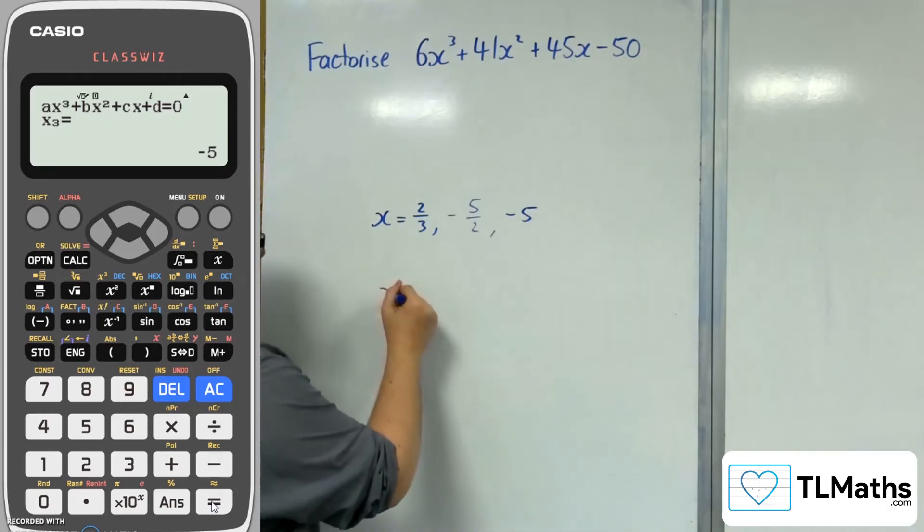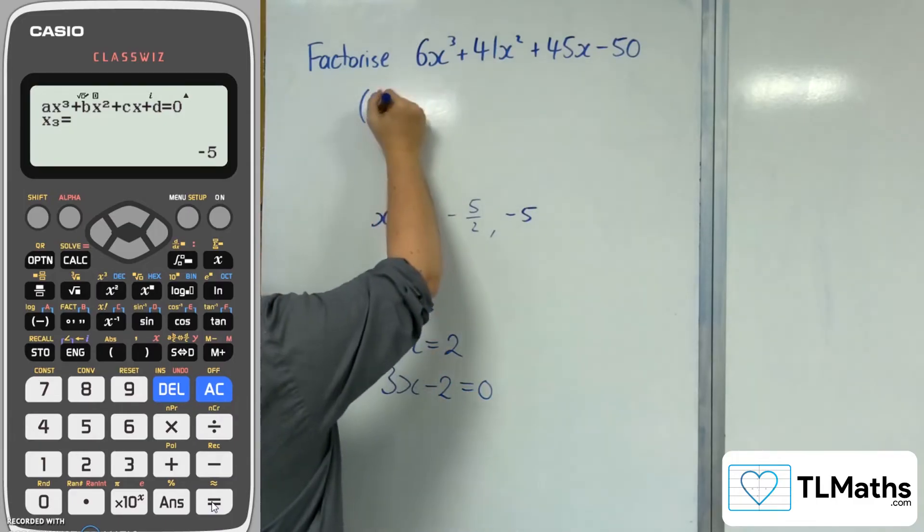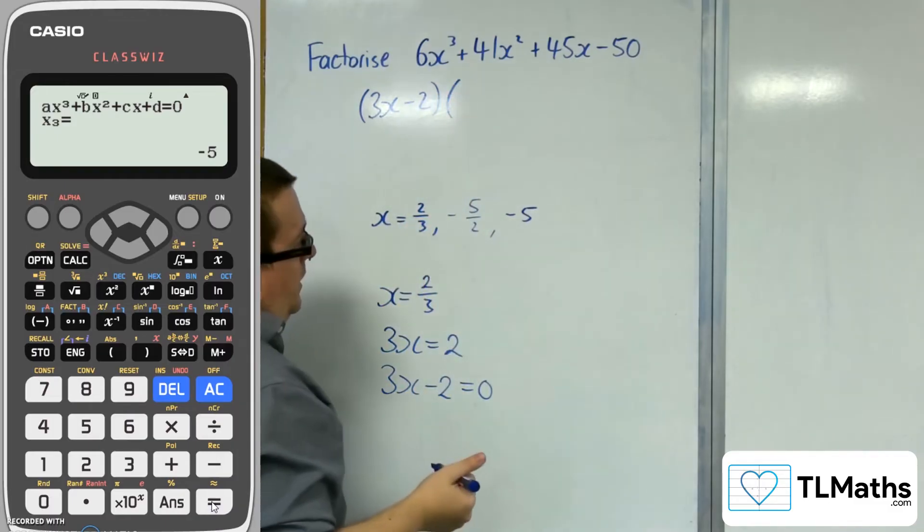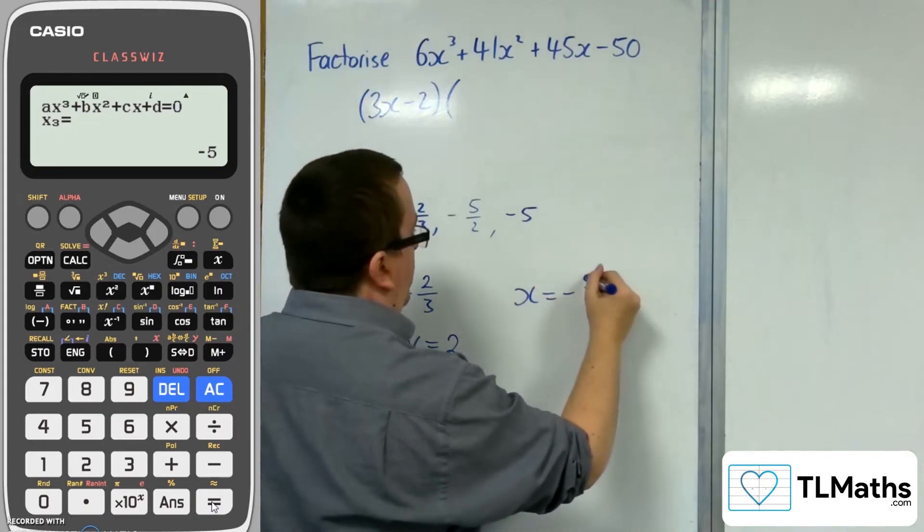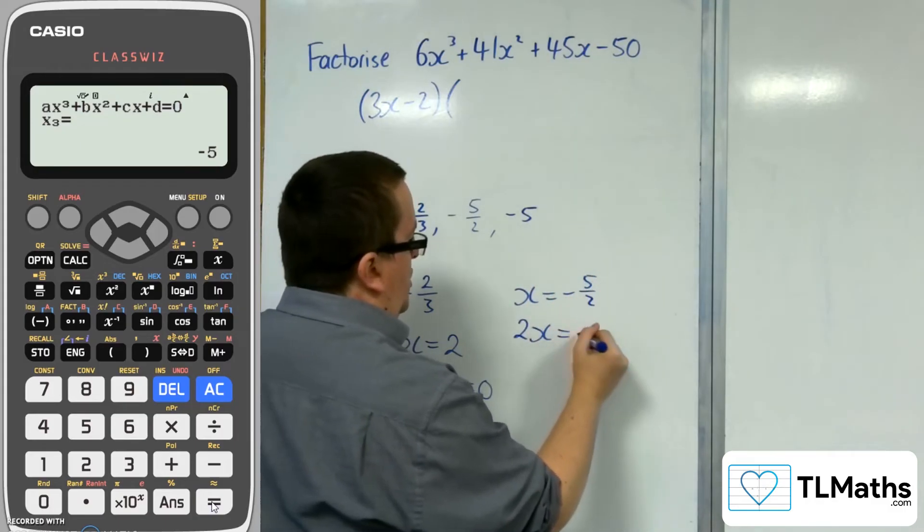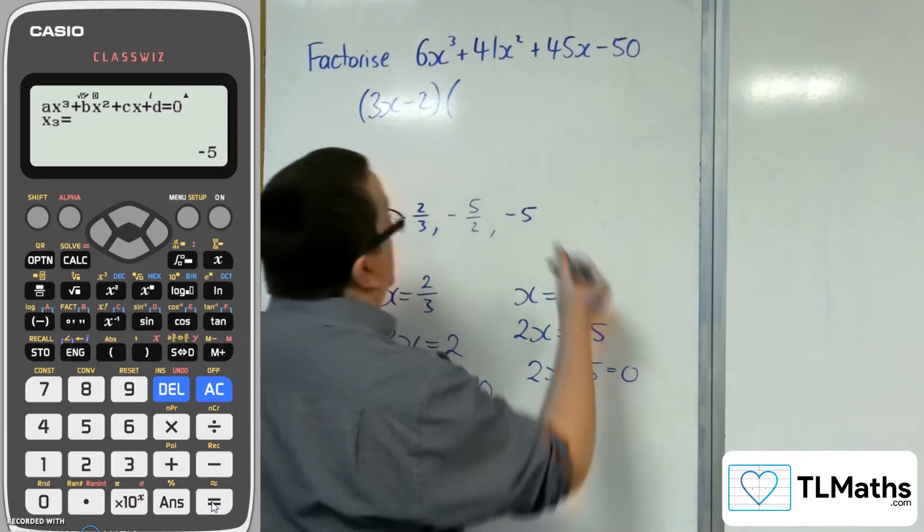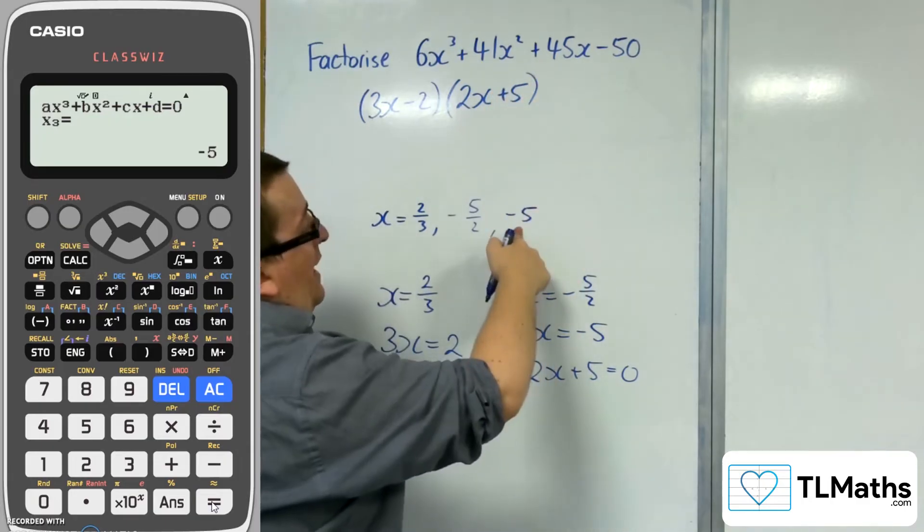So what does this relate to? Well, if x = 2/3, then 3x = 2, so 3x - 2 = 0. So 3x - 2 would have been one of the brackets. Then, -5/2. So x is -5/2. Multiplying both sides by 2, and adding 5 to both sides, so 2x + 5 was one of the brackets. And last but not least, we've got the x - 5. So that means x + 5 is also one of the brackets.